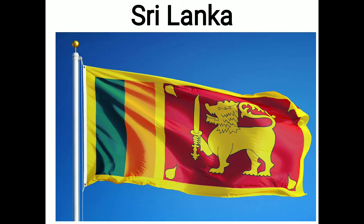The next one is the flag of Sri Lanka, also called the Sinha flag or Lion Flag. It consists of a golden lion holding a castling sword in its right forepaw on a maroon background, with four gold bo leaves, one in each corner.